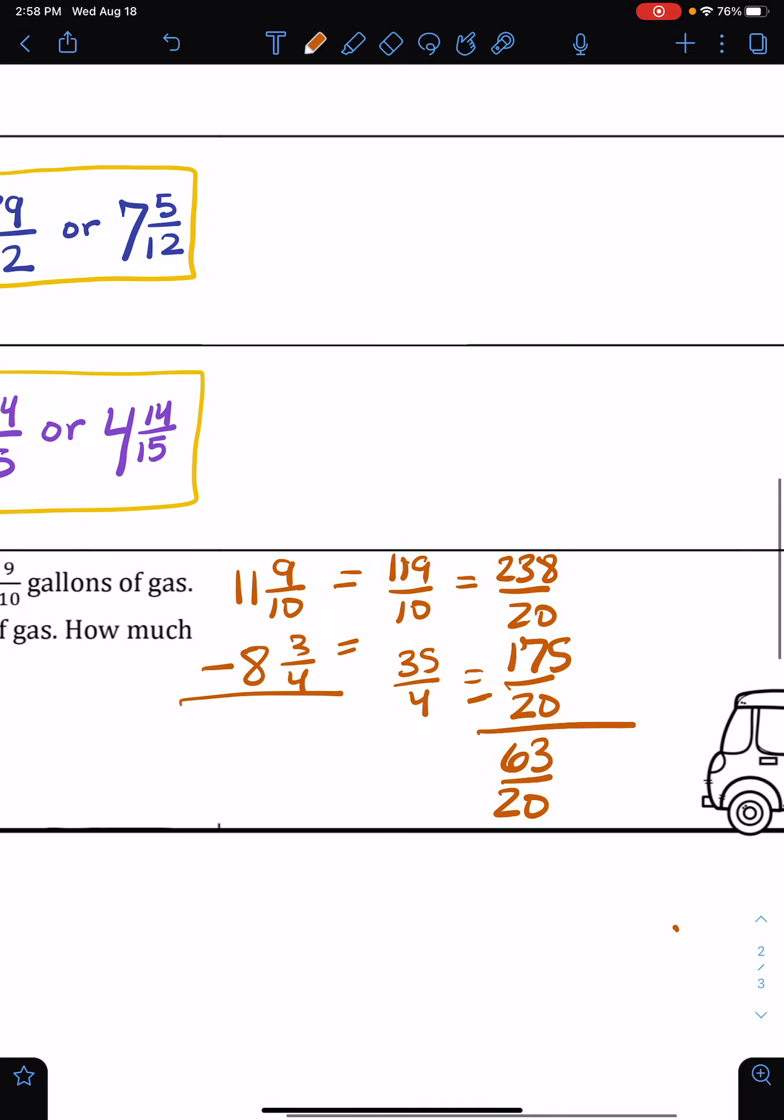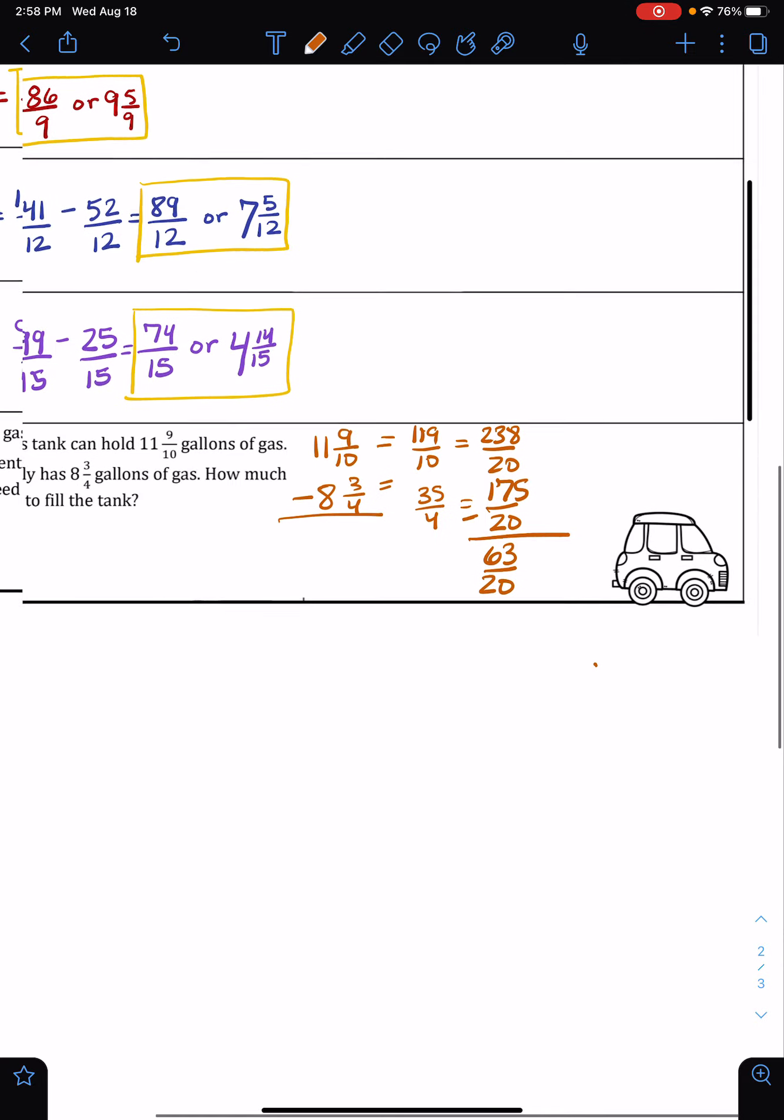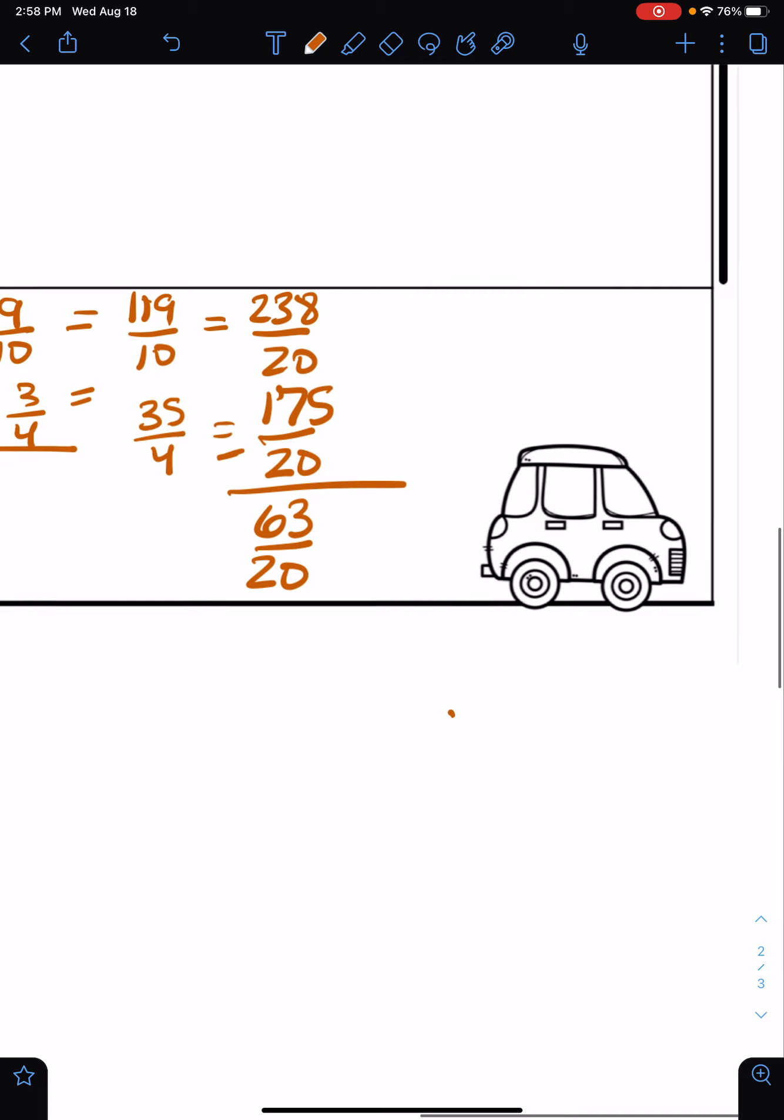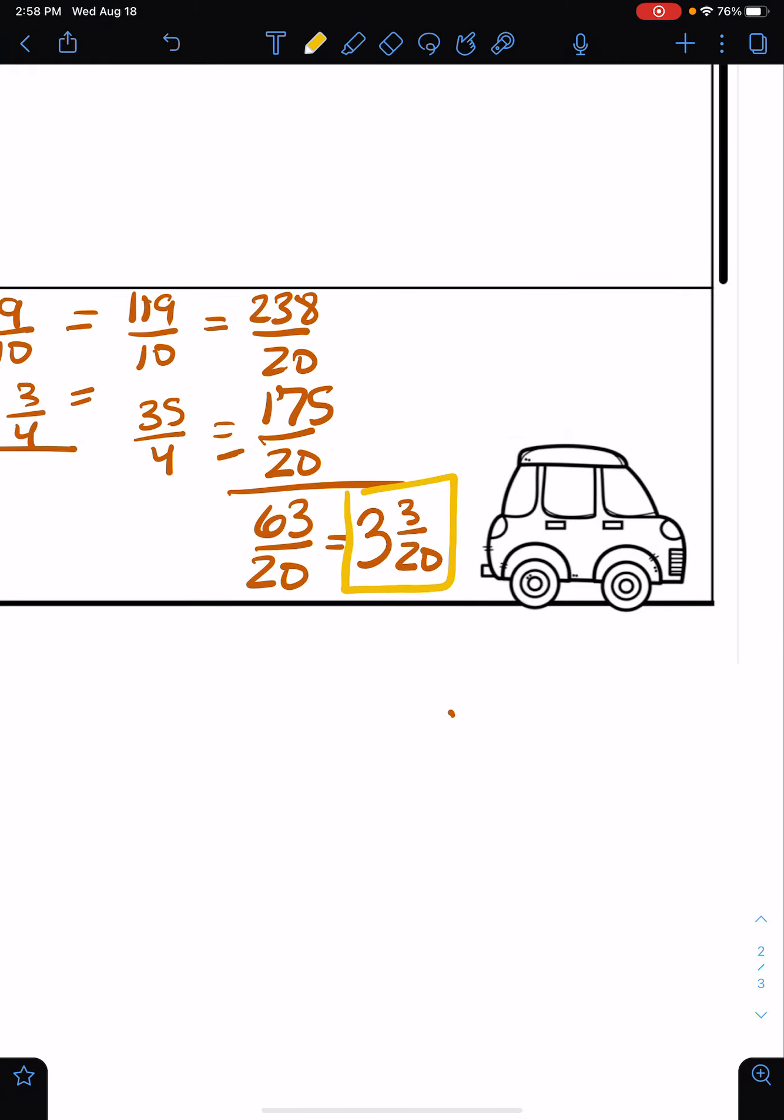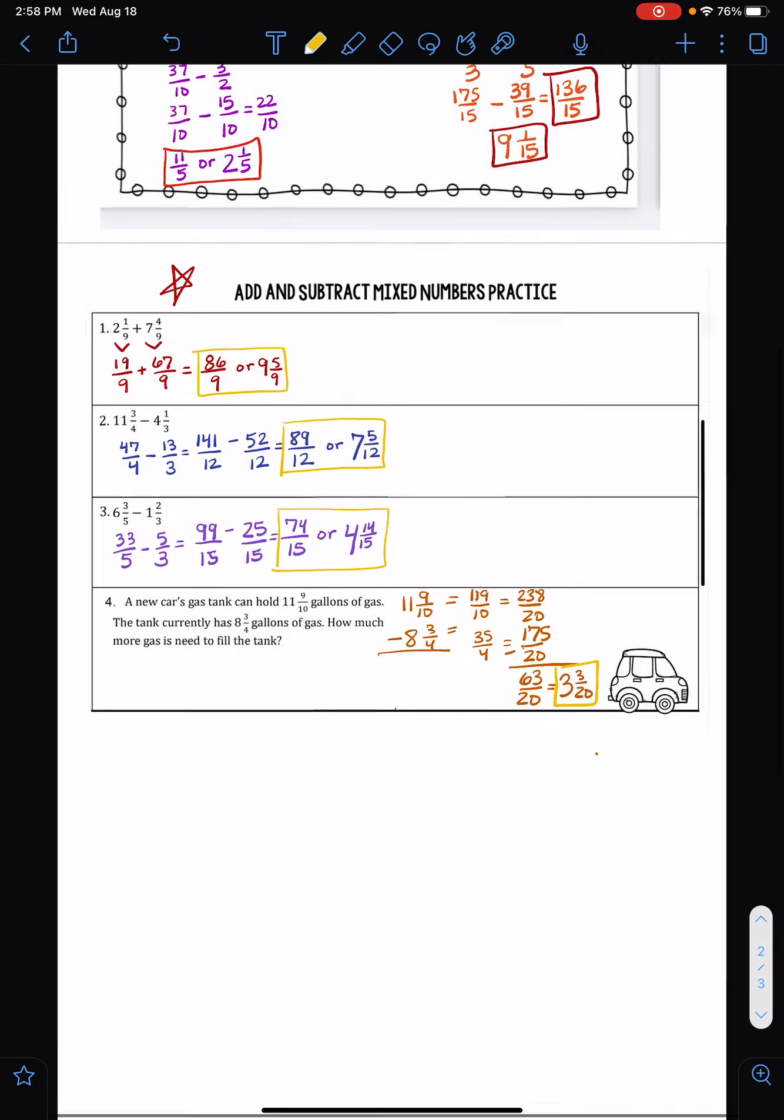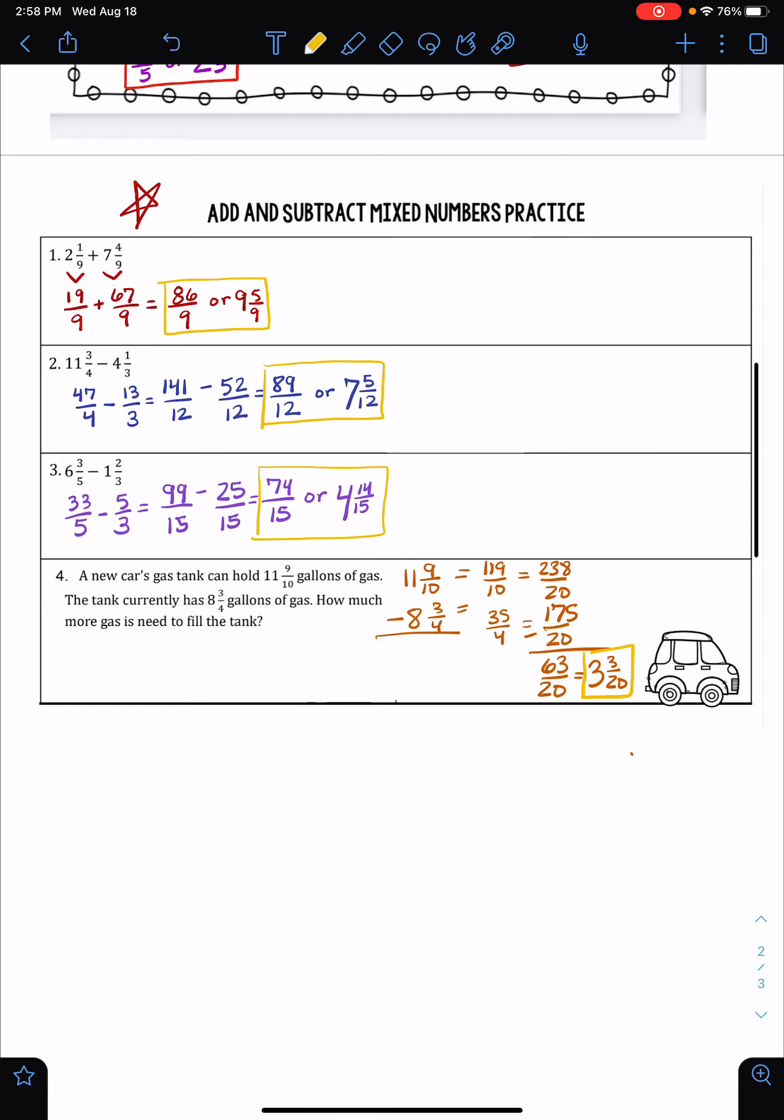Now normally I would say leaving it as an improper fraction is what I prefer, but we're talking about gallons of gas, and we don't usually talk about gallons of gas in improper fractions. We use mixed numbers. So I'm going to change this to 3 and 3 twentieths gallons. And that is it, my friends. That is the inside of our notes on adding and subtracting with mixed numbers. Thanks for watching.